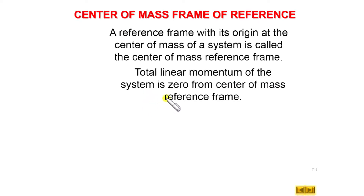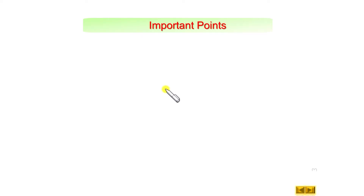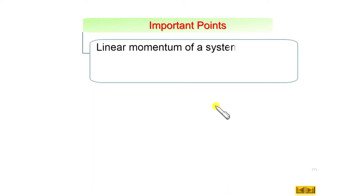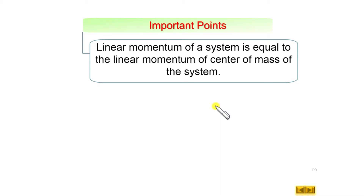Now let us discuss some important points. One very important point is that the linear momentum of the system equals the linear momentum of the center of mass of the system. This means if we know the velocity of the center of mass, we can calculate the linear momentum of the system simply as the total mass of the system multiplied by the velocity of the center of mass.